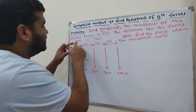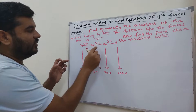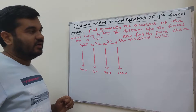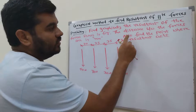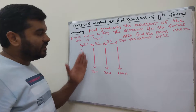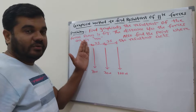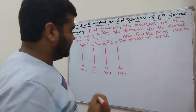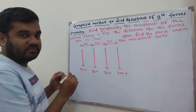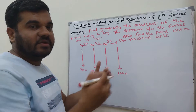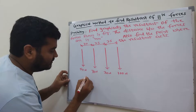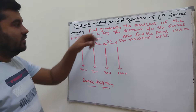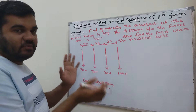The distances between the forces are given in mm: 30 mm, 25 mm, and 35 mm. We need to find the resultant using the graphical method and also find the point where the resultant acts — that is, we need to locate the resultant. The first step is to draw the space diagram, using a convenient scale. Whatever is given in the figure, transfer it once again into the space diagram.